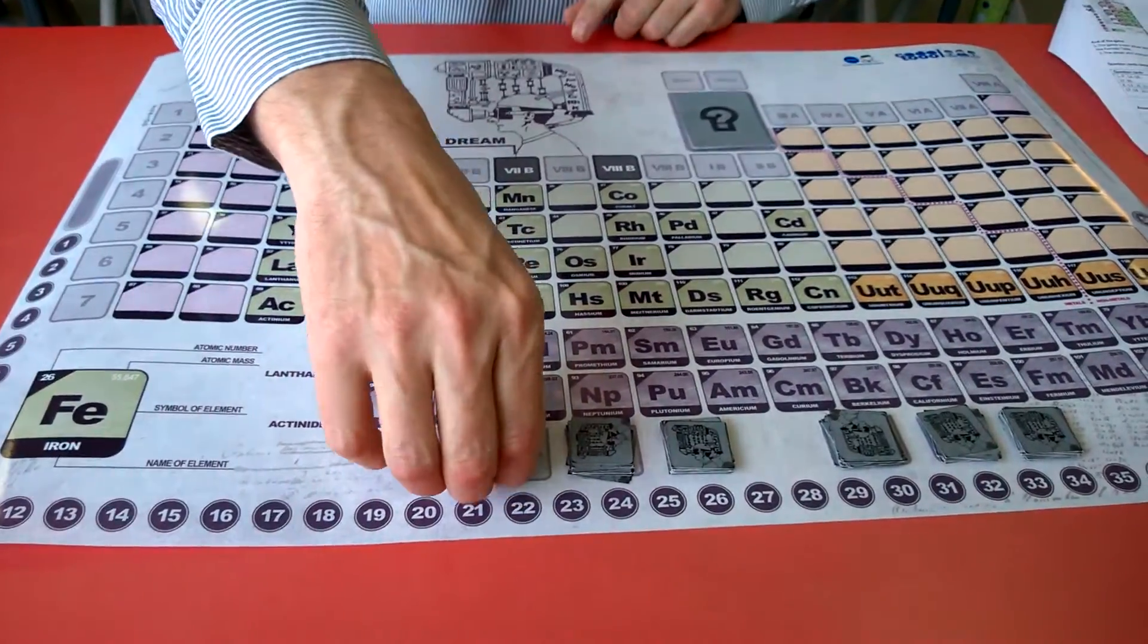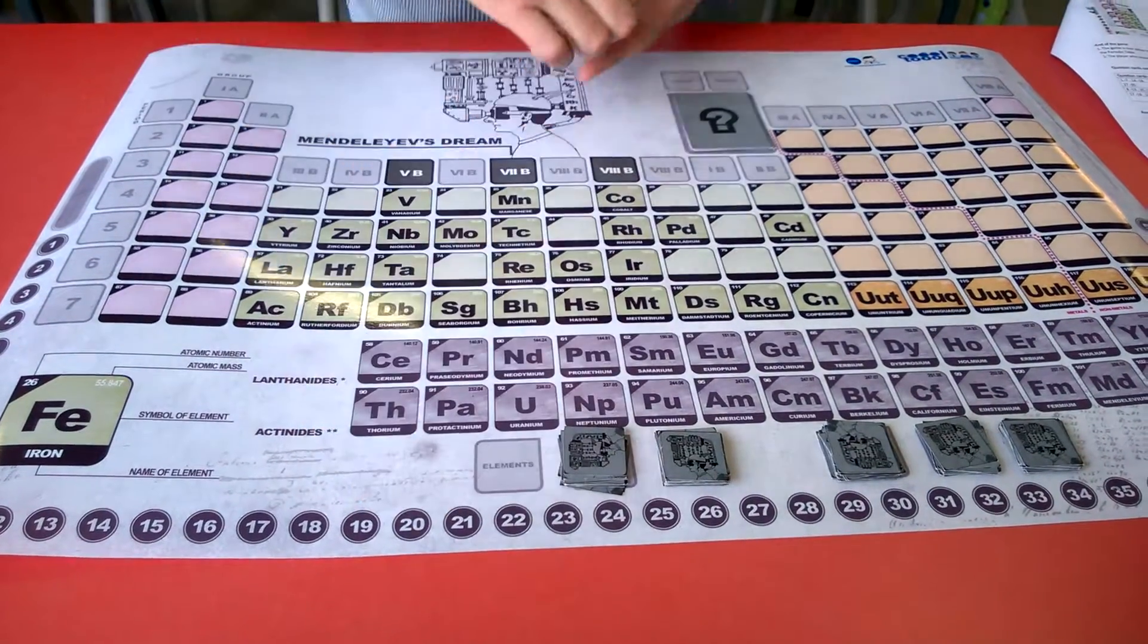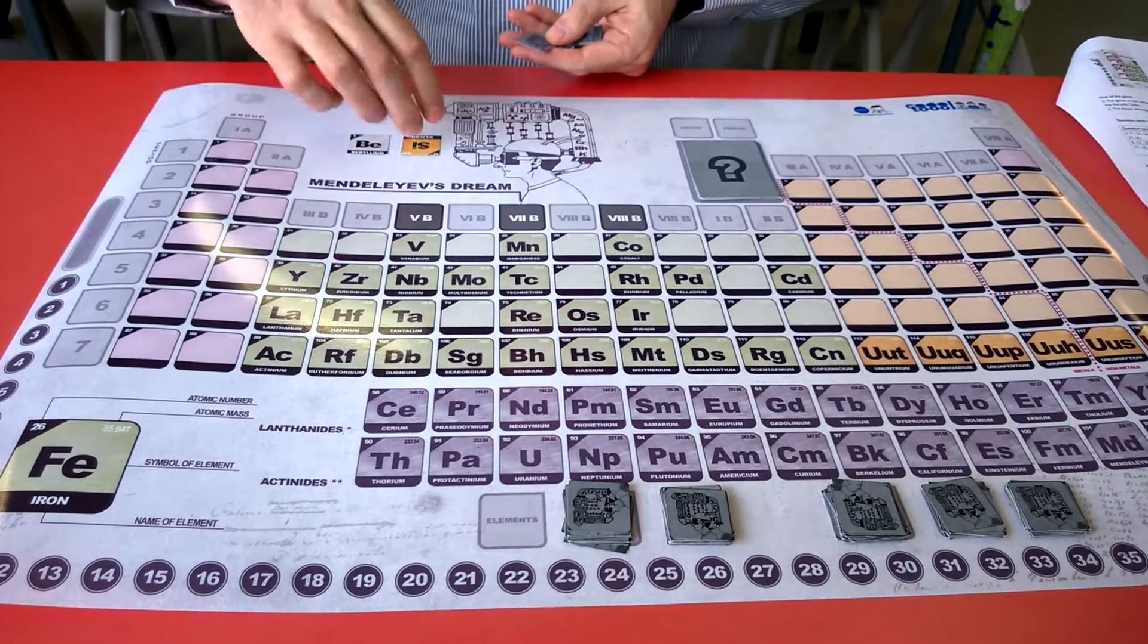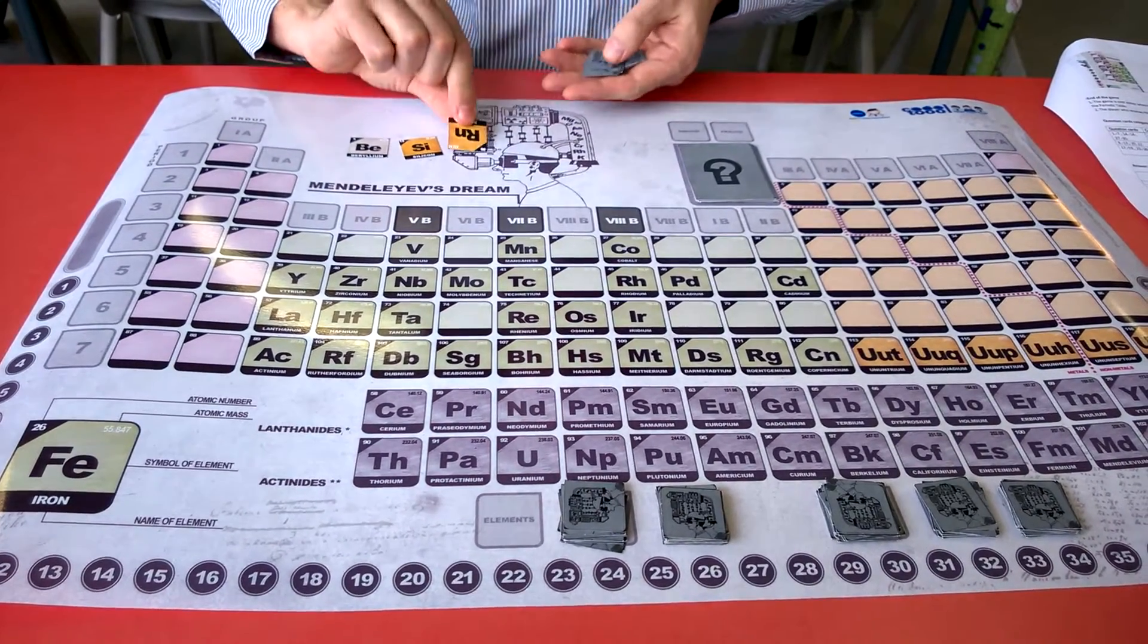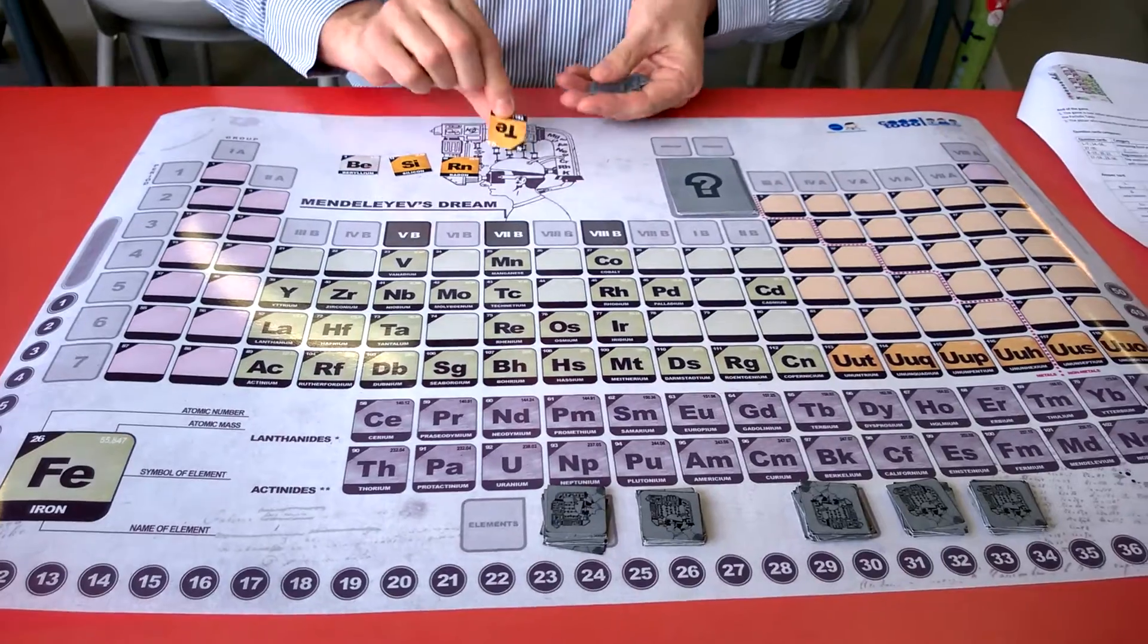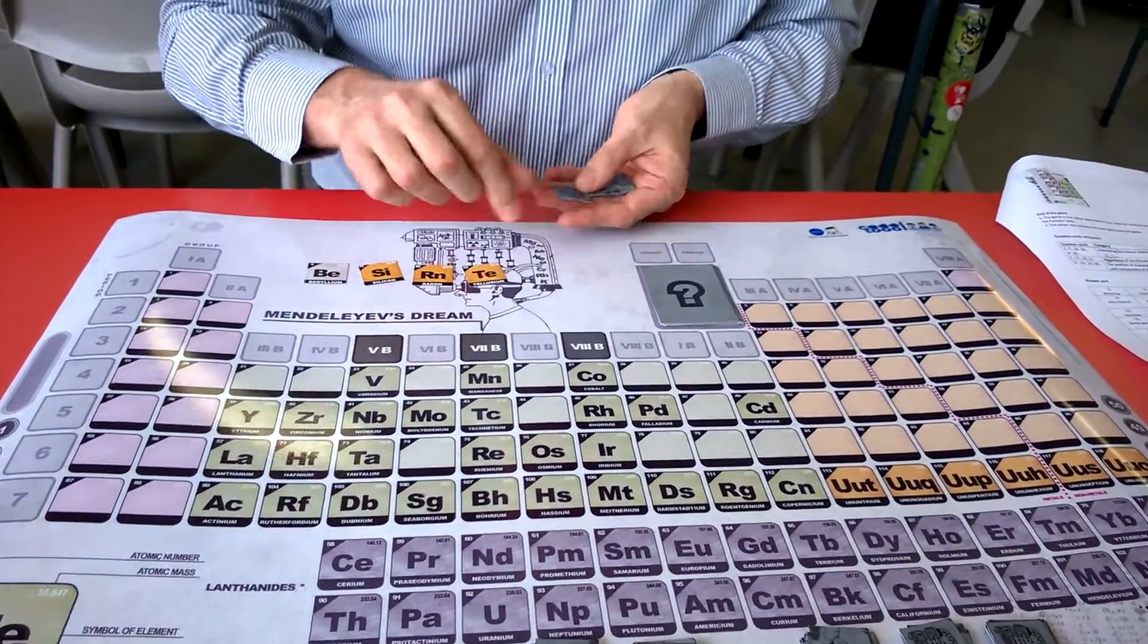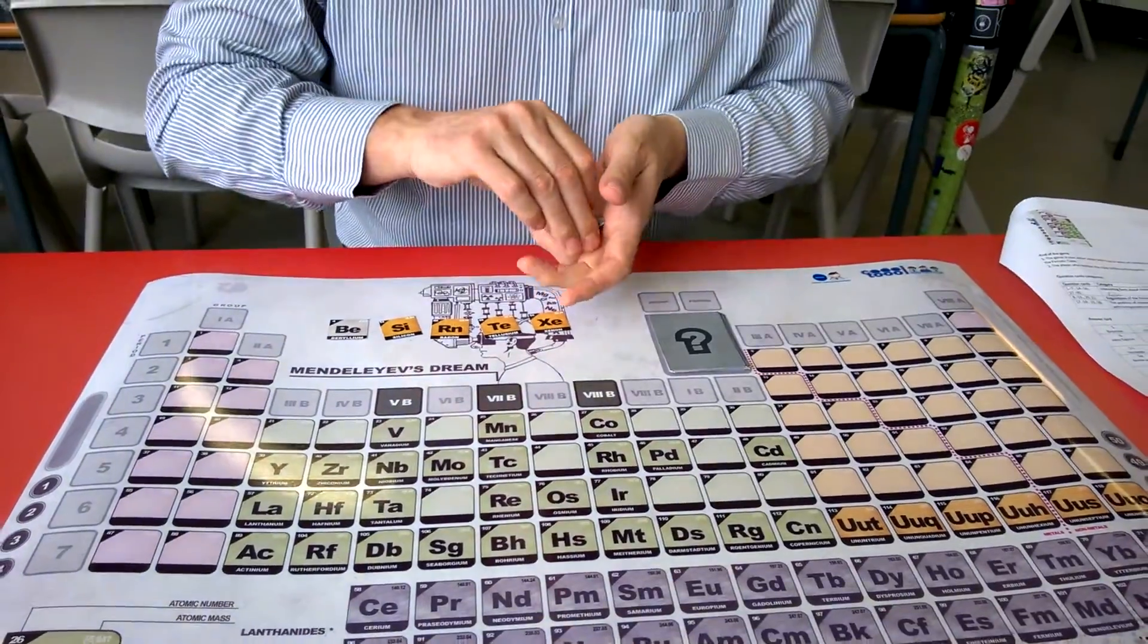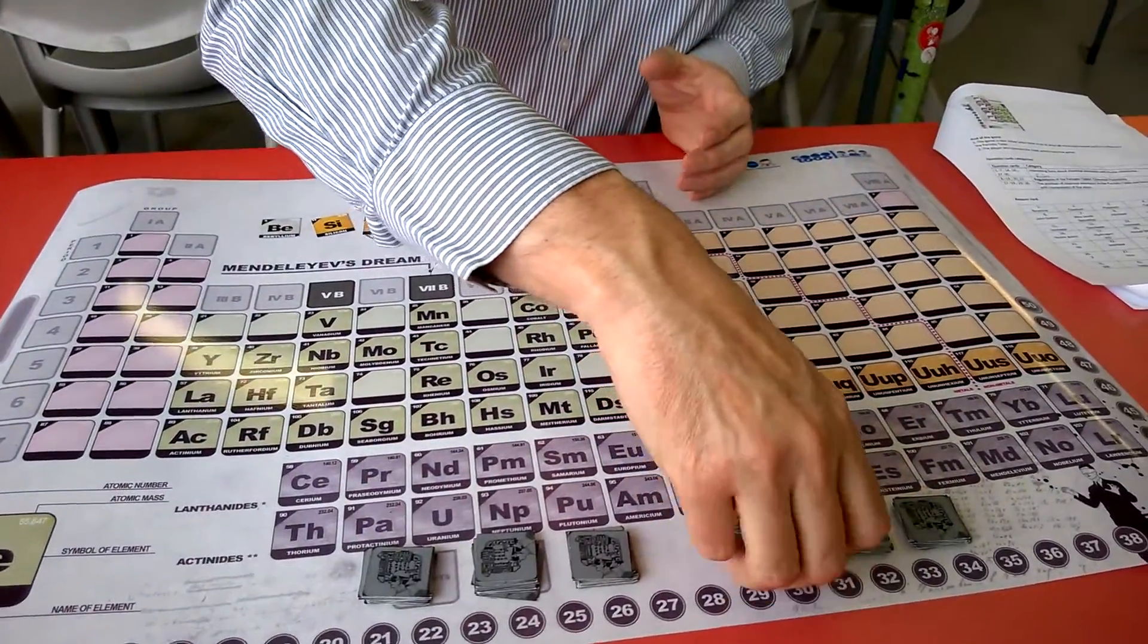You will start off by taking some of the element cards and you will take five of the element cards and then you will also take five of the direction cards.